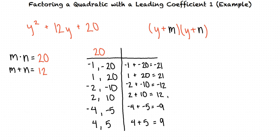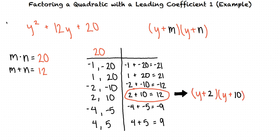When we add all the pairs, we see that 2 and 10 add to 12, so these are going to be the numbers that we use. Now we can write our factored form as y plus 2 times y plus 10.